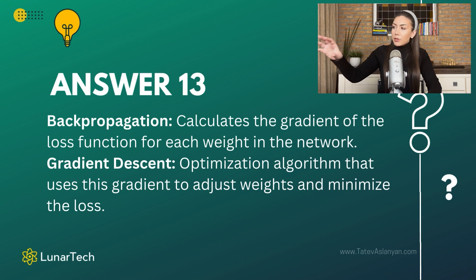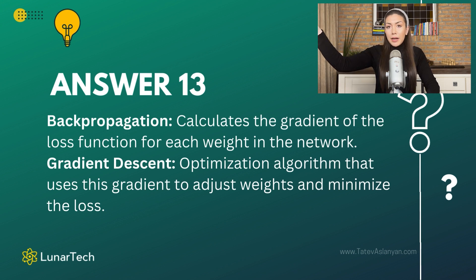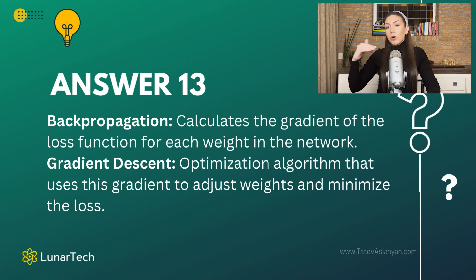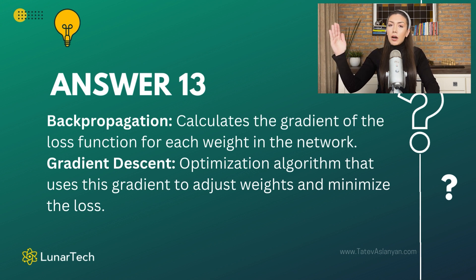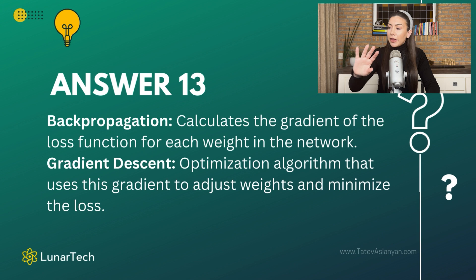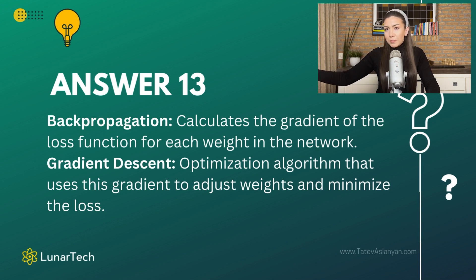So backpropagation happens in the middle: once we complete our forward pass, backpropagation is done, and then we perform our backward pass. We use backprop and then continuously, iteratively update our model parameters from the deeper layers to the earlier layers — and this updating is what is done by the optimization algorithm.